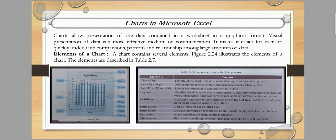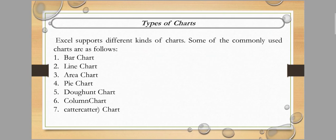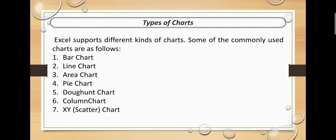Next is chart area — it is the entire chart area. Now, types of charts: Excel supports different kinds of charts. The commonly used chart types are seven in total: bar chart, line chart, area chart, pie chart, donut chart, column chart, and XY scatter chart.